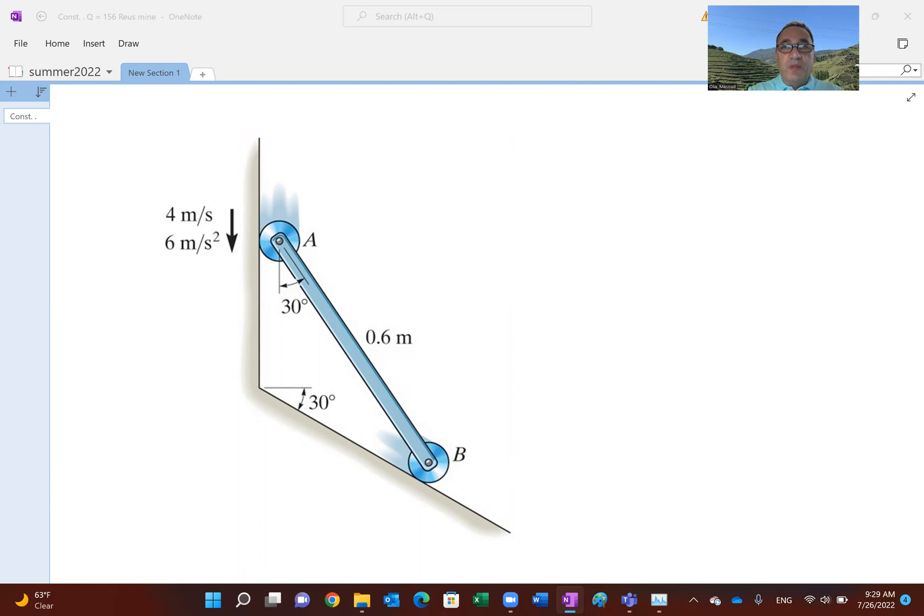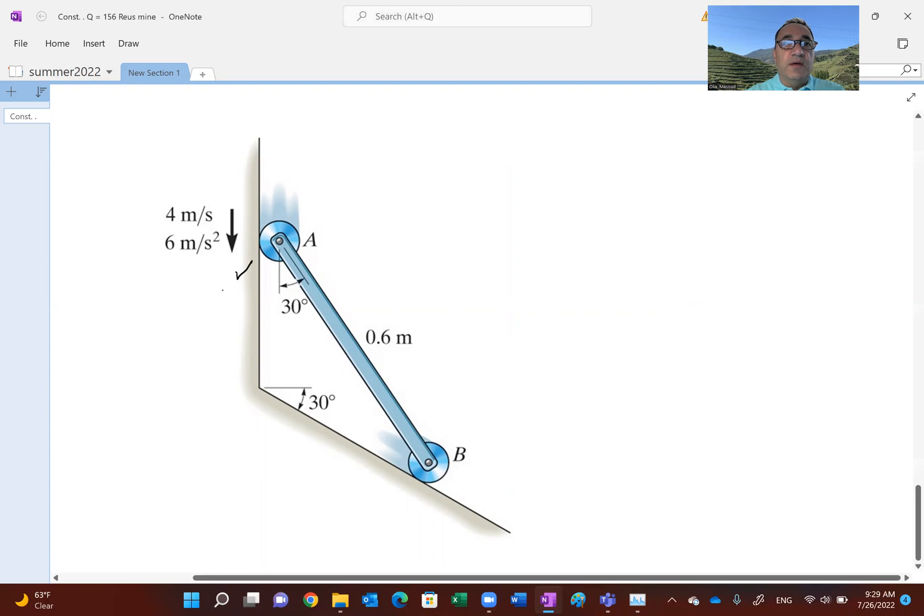And I have a video similar to this for a while now on YouTube. But this is a little bit different, where you see this bar. At this instant, we are given the velocity of point A to be 4 meters per second. So these are given. VA is 4 meters per second. Clearly, A is confined to move vertically down. And acceleration of A is 6 meters per second squared down. So that means point A is accelerating.